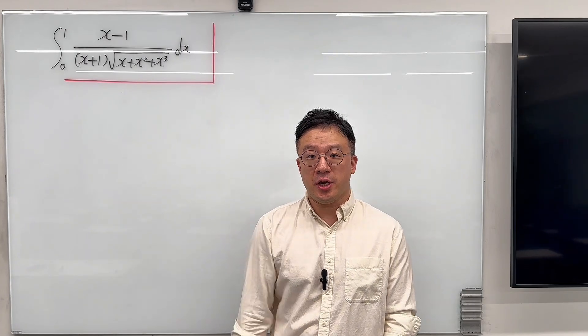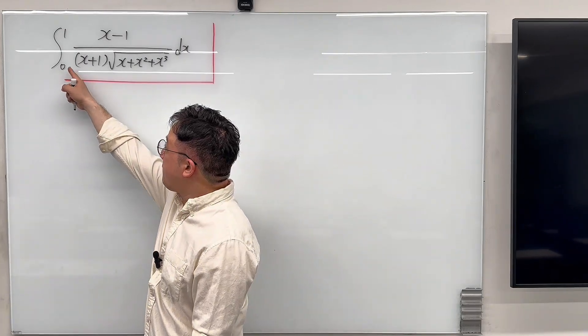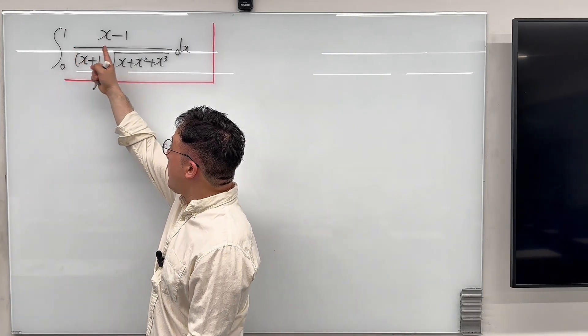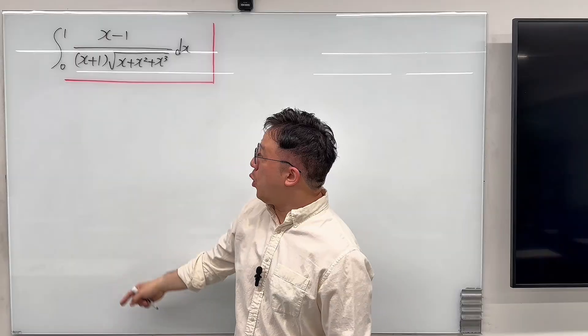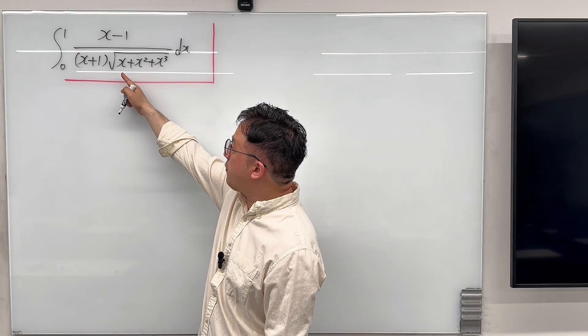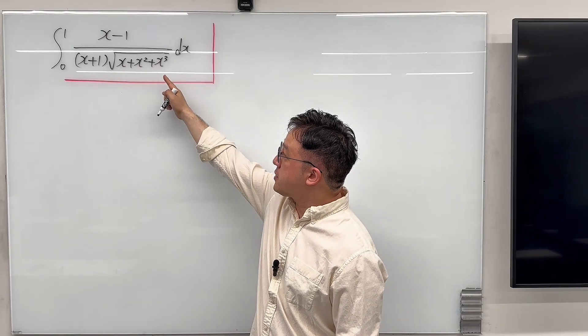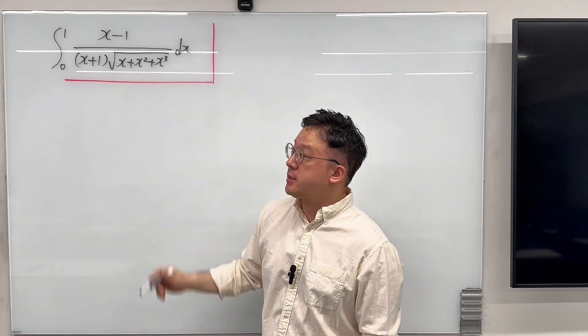Okay, here's the question. The question is: evaluate the integral from 0 to 1 of (x minus 1) over (x plus 1) times the square root of x plus x squared plus x cubed, dx.